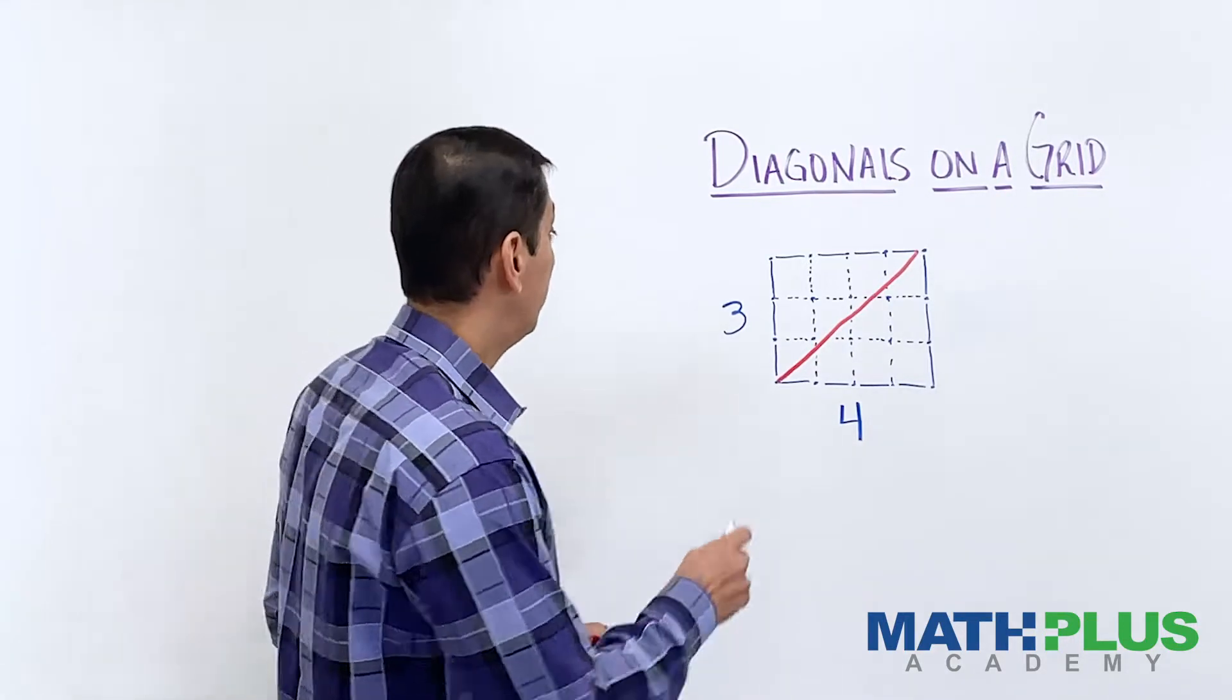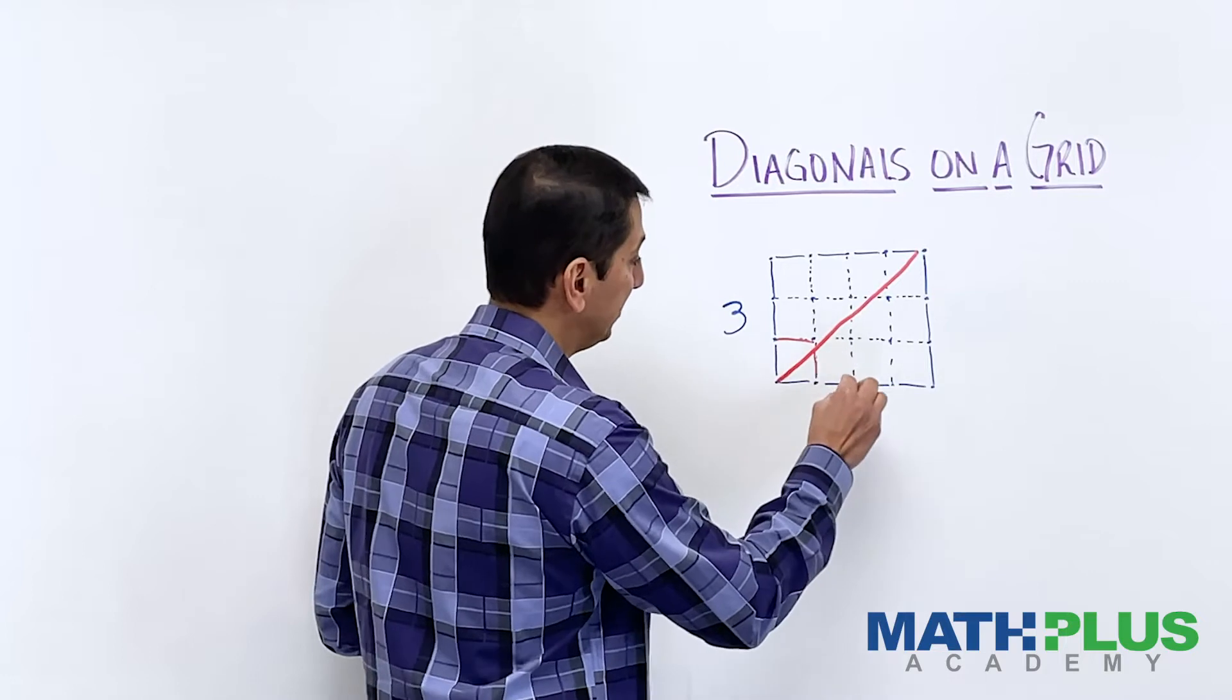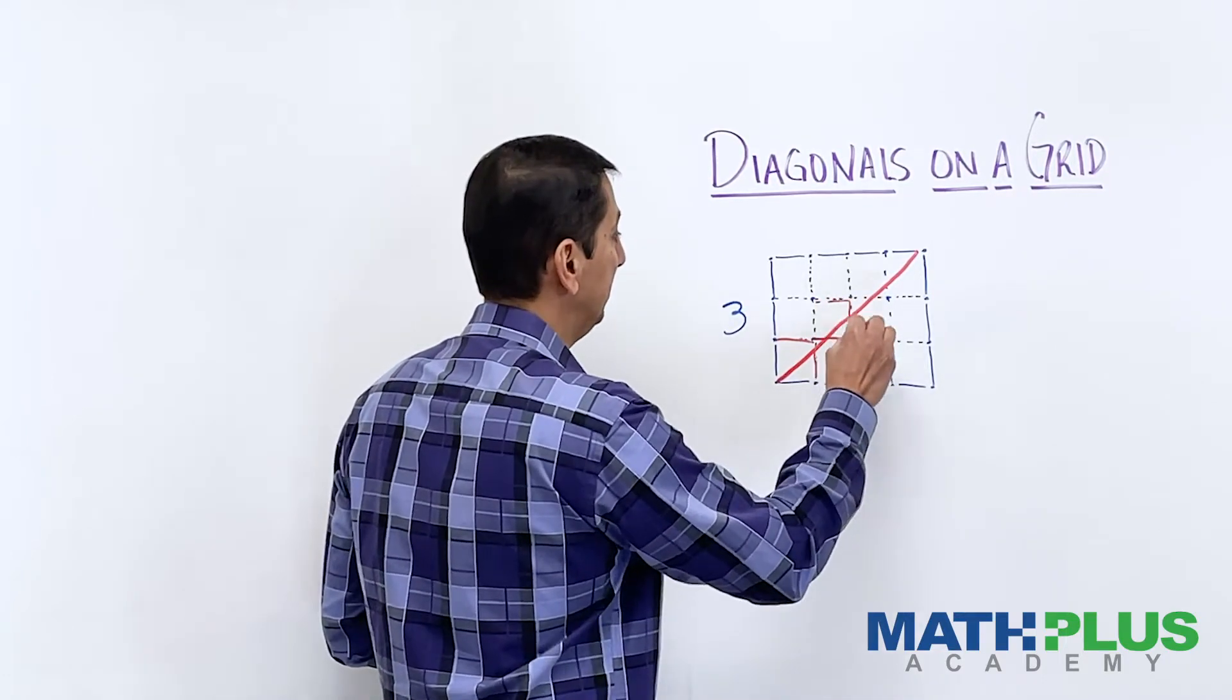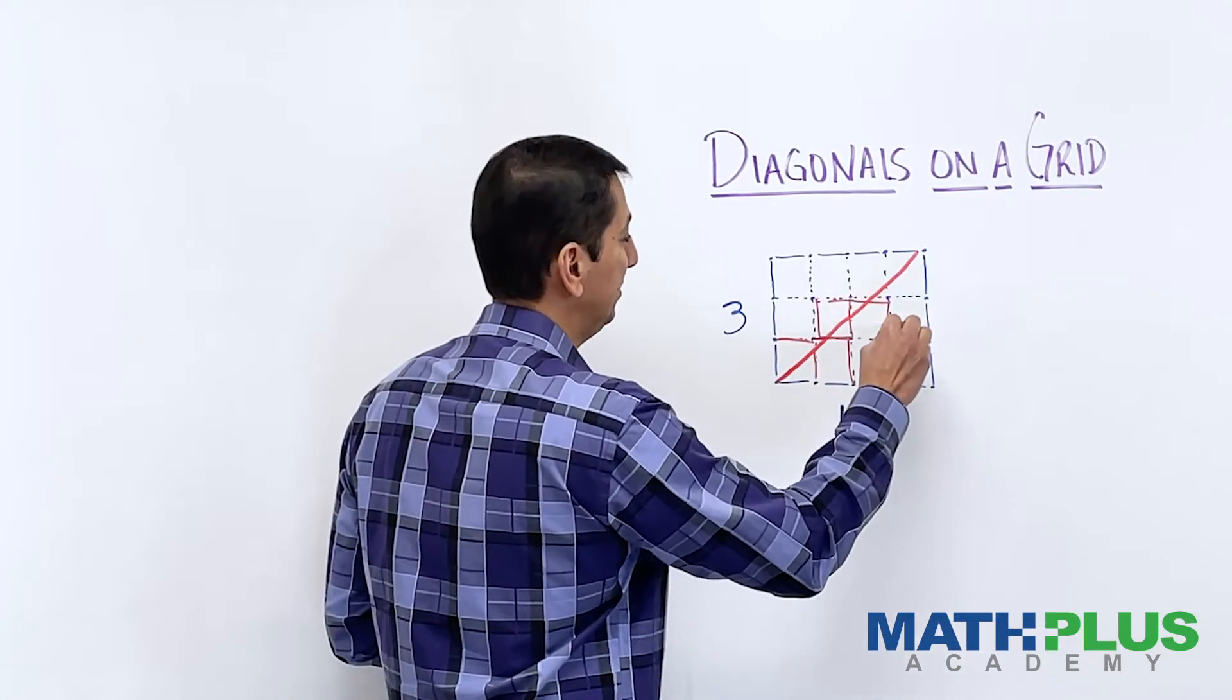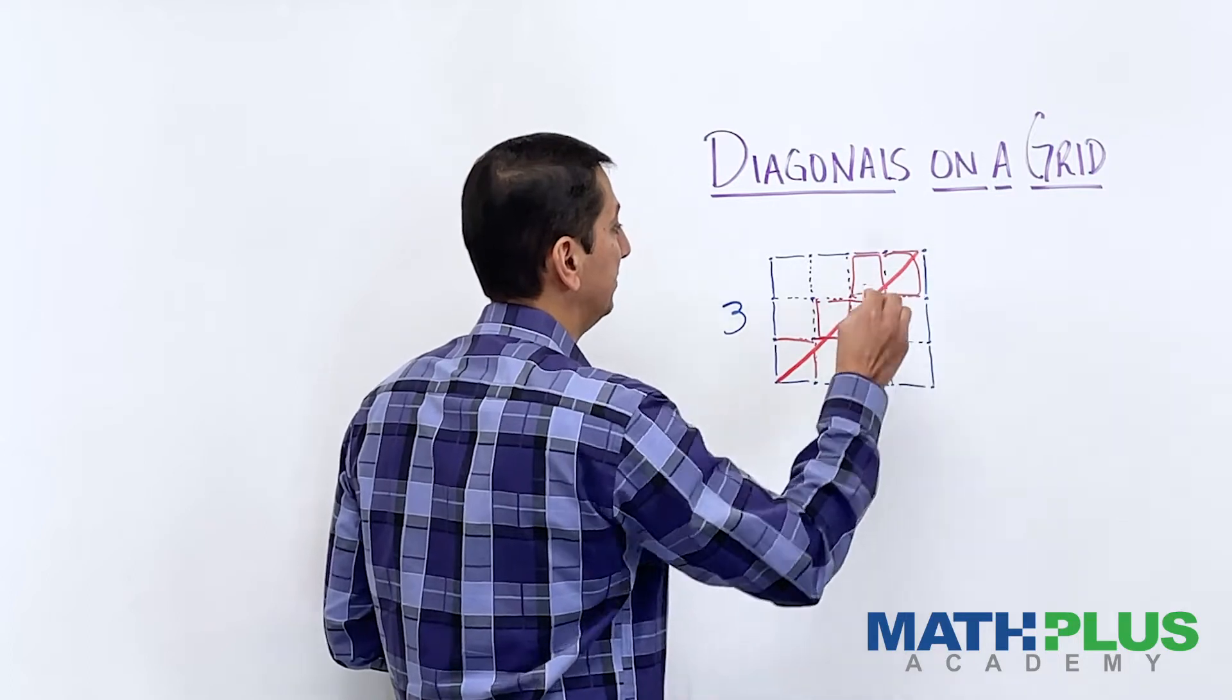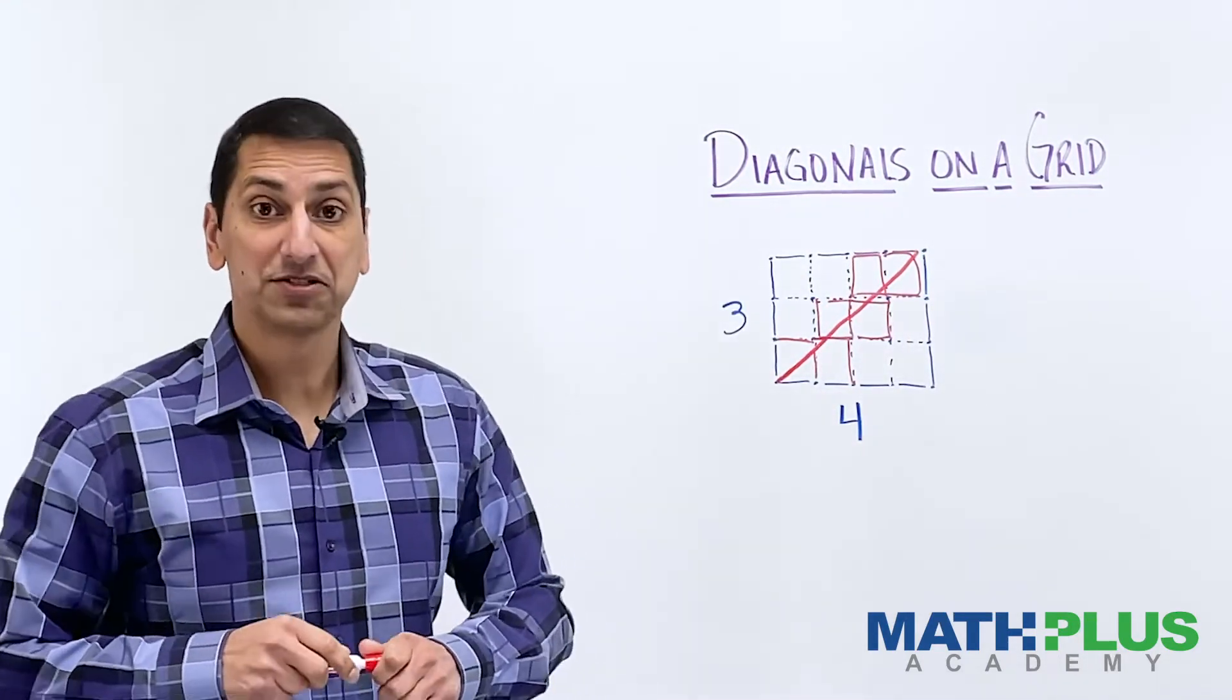So it goes through this square right here, one. It actually just goes through this one a little bit. It goes through this one, and this one, and this one, and that one. Okay. So what is that? One, two, three, four, five, six squares.